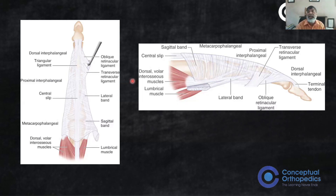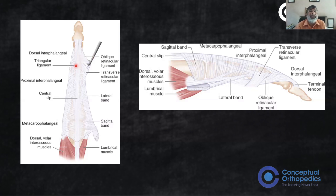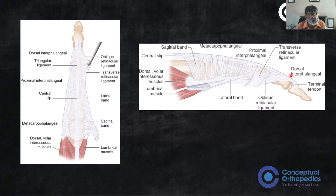There is another ligament to remember here. When the word 'retinaculum' comes up in the context of the finger, remember the three retinacular ligaments. The triangular ligament holds the lateral bands on the dorsum. The transverse retinacular ligament is rectangular in shape and holds the bands on the palmar/volar side. There is also a third ligament that runs obliquely from the volar side to the extensor side, called the oblique retinacular ligament.